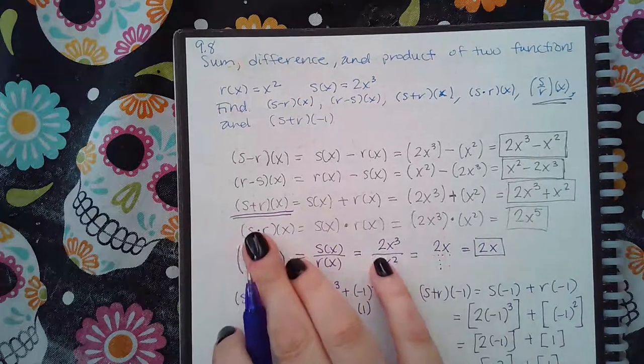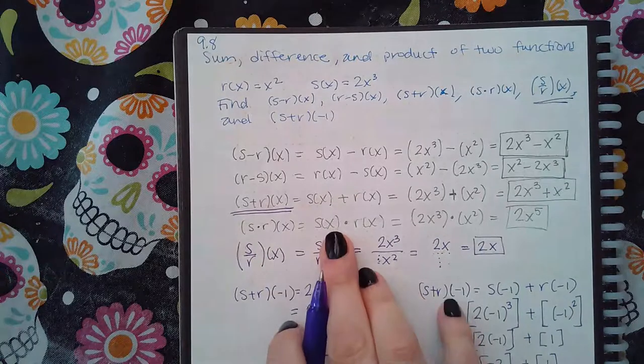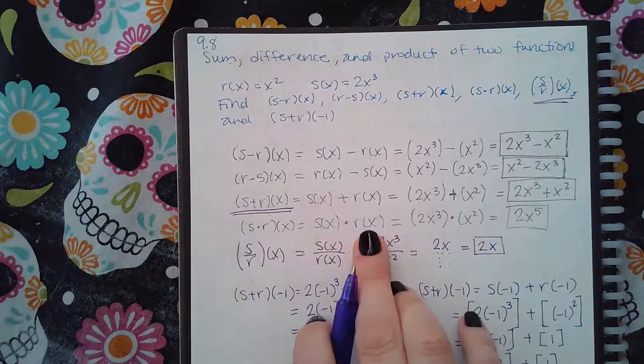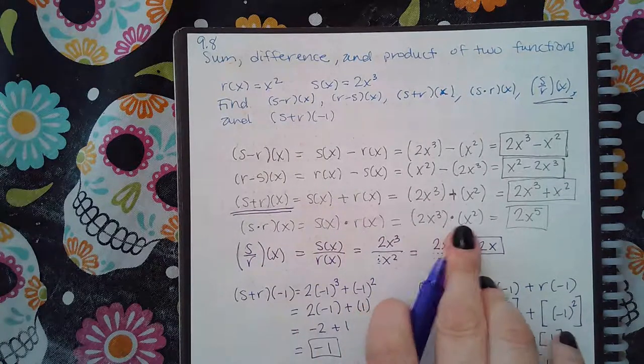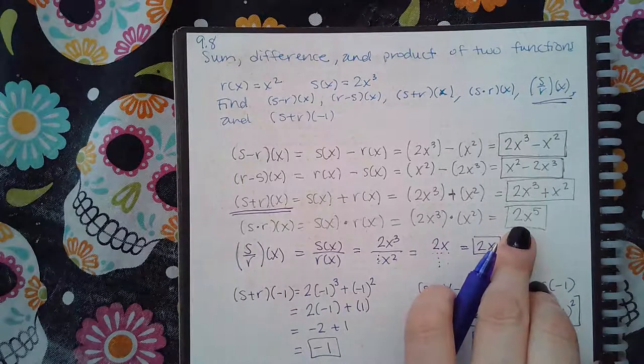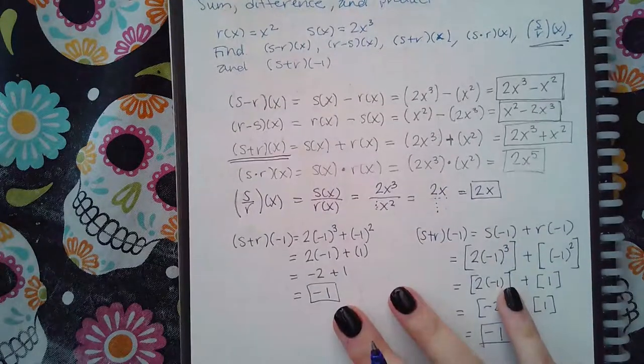And then (s times r)(x) means s(x) times r(x), so 2x cubed times x squared, which is 2x to the fifth. And that's as simple as it's going to get.